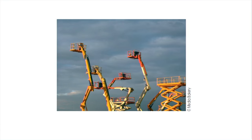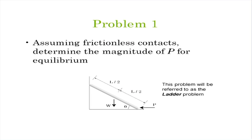These are examples of mechanisms solvable using the Principle of Virtual Work. Let us consider the ladder leaning against a wall problem. Assuming frictionless contacts at both contact points, we need to determine the magnitude of force P for equilibrium. The forces acting are W, and normal reactions in the horizontal and vertical directions.